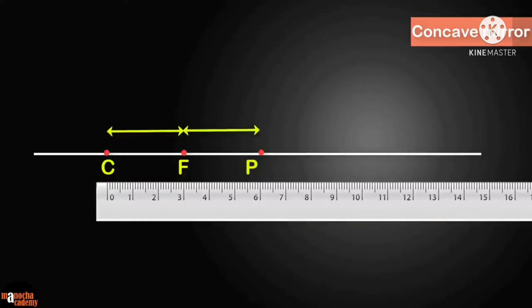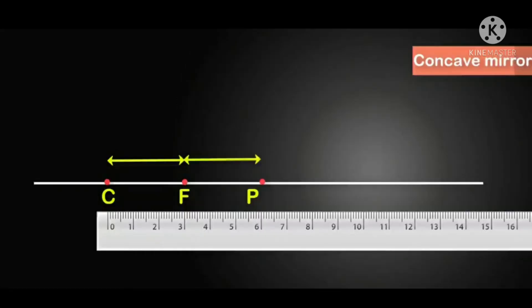You can take any convenient distance. F should be exactly in the middle such that CF equals FP. C is the center of curvature, F is the focus, and P is the pole of the mirror.